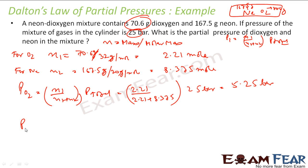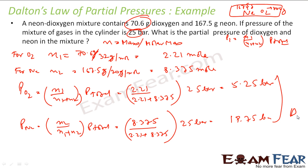If you want to find the partial pressure by neon gas, you have to put n2 by n1 plus n2 into P total. So what is n2? 8.375 mole, and this will be 2.21 plus 8.375 total into 25 bar. So if you solve this, this becomes 19.75 bar, and this is my answer.